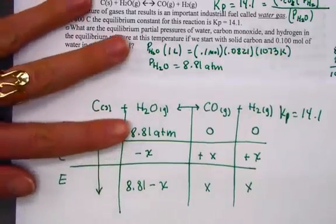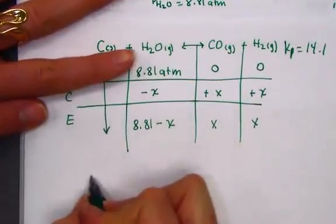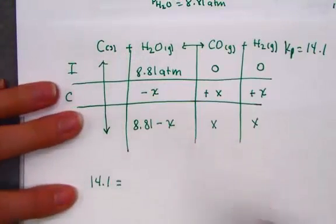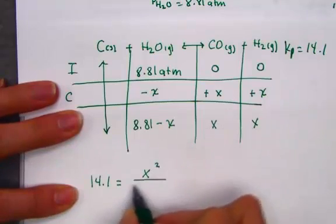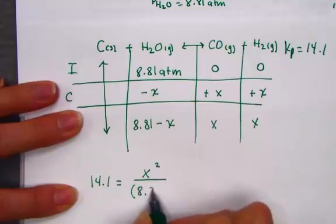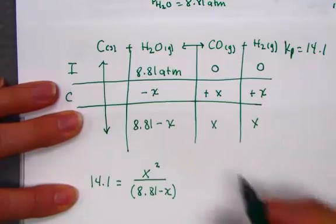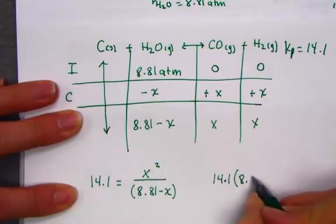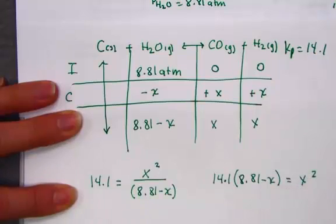Knowing that we can sub that into the Kp expression, Kp was given to us as 14.1. Products over reactant, x times x, I'll write as x squared, and on the bottom, 8.81 minus x. We will distribute, 14.1 distributed through 8.81 minus x, set equal to x squared.